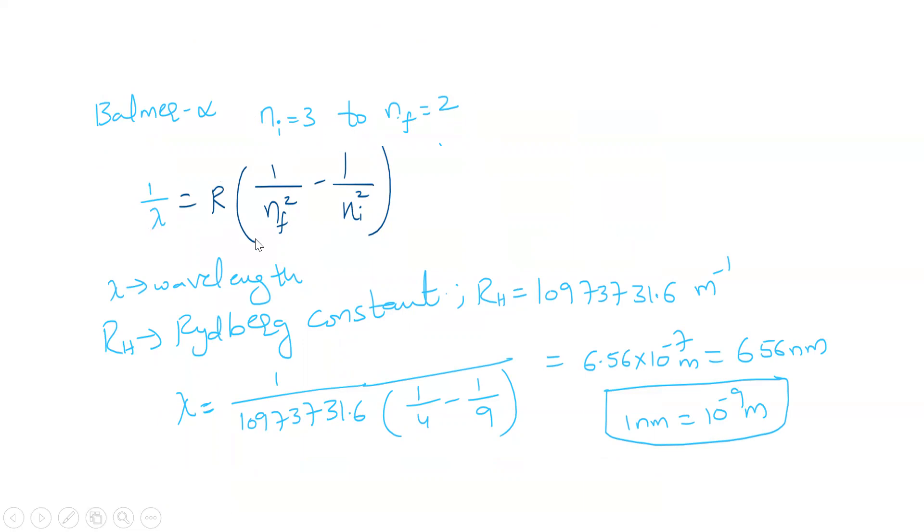This is the formula for calculating the wavelength of emitted photons, where 1 by lambda is equal to R into 1 by Nf square minus 1 by Ni square. Here Nf and Ni are the final and initial orbits, and R is the Rydberg constant.